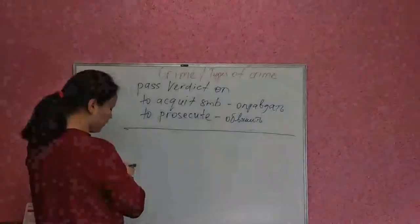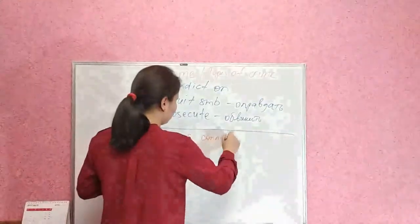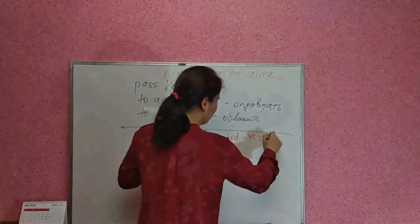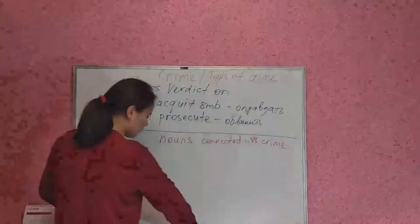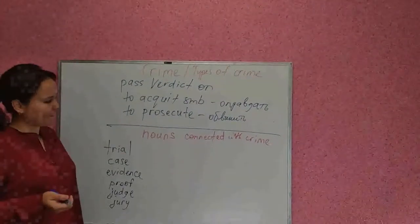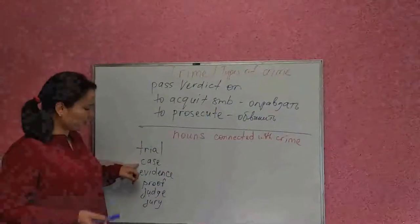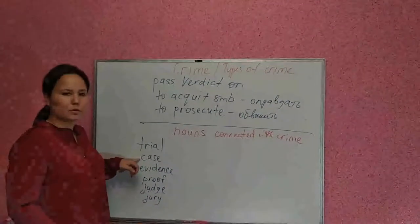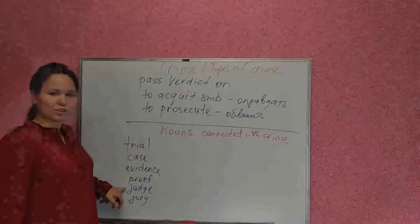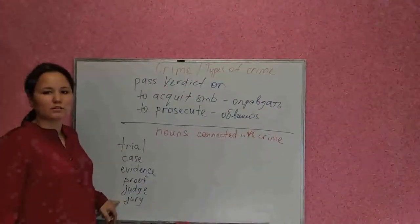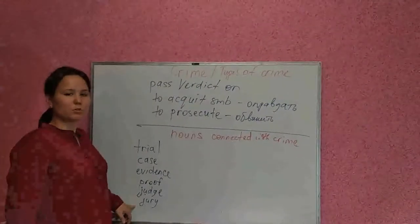Now let's talk about some nouns connected with crime. Take a look at the last section in your book. The nouns are: trial — meaning the court proceedings; case — the fact of a crime; evidence — grounds or basis; proof — a piece of evidence; judge — the judicial authority; and jury — the members of the jury who usually deliver a verdict on whether a person is guilty or not.